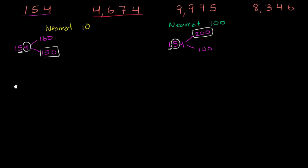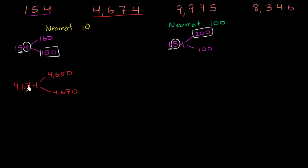Let's do some more of these. So 4,674. The multiple of 10 above that is 4,680. The multiple of 10 below that is 4,670. We're concerned only with the nearest multiple of 10, so do we round up or down? We look at the ones place. If the ones place is five or greater, we round up; if it's less than five, we round down. It's less than five, so we round down to 4,670.